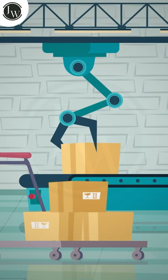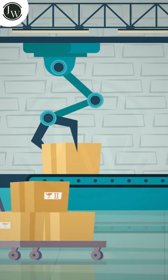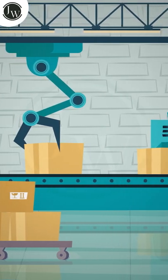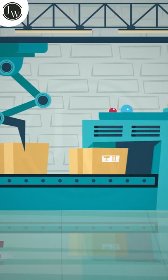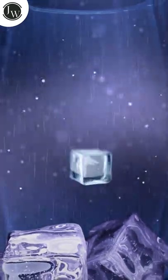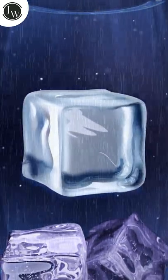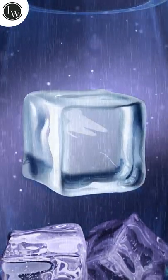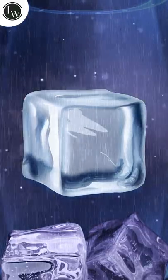Dry ice is mainly used in the food sector to preserve edible items during export and import, and also in artificial rain. When mixed together with water, it sublimates to a cold mixture of CO2 and humid air that results in the condensation of water vapor along with dense fog.